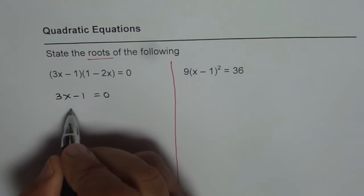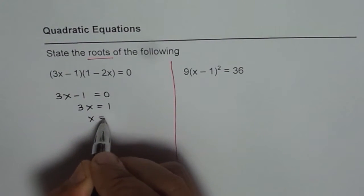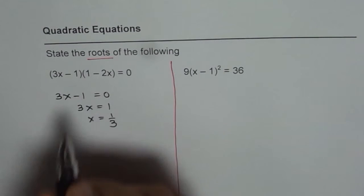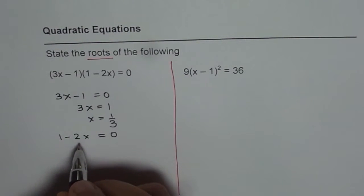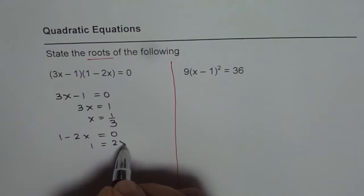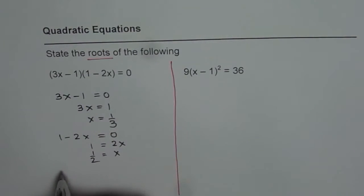3x minus 1 equals 0 gives us 3x equals 1, or x equals 1 over 3. On the other hand, 1 minus 2x equals 0 leads to 1 equals 2x, or x equals half. So we have two solutions, and therefore our answer is x equals 1 over 3 or 1 over 2.